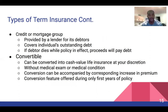Additional types of term insurance include credit or mortgage group insurance, which is provided by a lender for its debtors and covers outstanding debt if a debtor dies while the policy is in effect. Then there's convertible term insurance, which can be converted into cash value life insurance at your discretion without a medical exam. Conversion can be accompanied by a corresponding increase in premium, and the conversion feature is offered only during the first years of the policy.